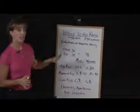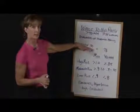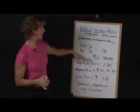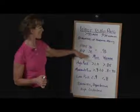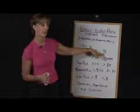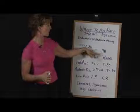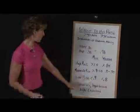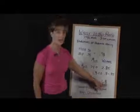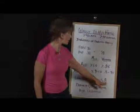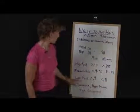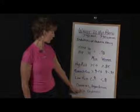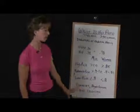Basically, we take the waist measurement — this individual has a waist of size 30 — and divide it by the hip measurement of 38, and we get 0.78. This was a woman. So 0.78, if I look at my chart, puts this individual in a low-risk category for developing diabetes, hypertension, high cholesterol, and type 2 diabetes.